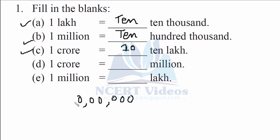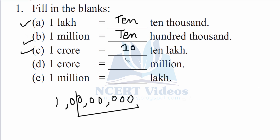Now for part d, 1 crore has seven zeros as established. Since 1 million equals 10 lakhs, we will first separate 10 lakhs out of 1 crore. That gives us 10 lakhs, and further we are left with a factor of 10, giving us 1 crore equals 10 million.